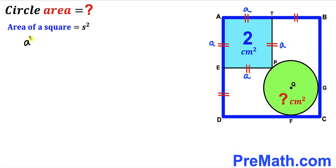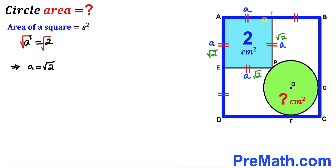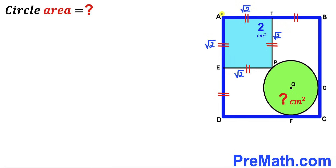So therefore we can write a squared equals 2. I am going to undo this square by taking a square root on both sides, so our side length lowercase a simply turns out to be the square root of 2 centimeters — square root of 2 across the board.